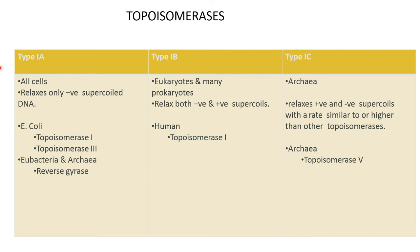Topoisomerases are divided into three types: Type 1A, Type 1B, and Type 1C. Type 1A is seen in all cells and relaxes only negatively supercoiled DNA. In E. coli, it is seen as topoisomerase I and topoisomerase III. In eubacteria and archaea, an example is the reverse gyrase. Type 1B is seen in eukaryotes and many prokaryotes, and relaxes both positive and negative supercoils. In humans, the example is topoisomerase 1.